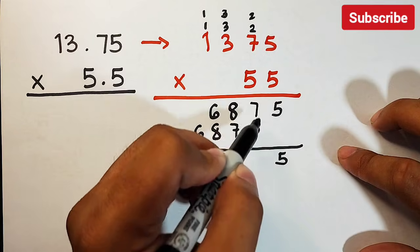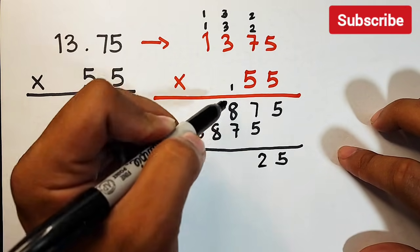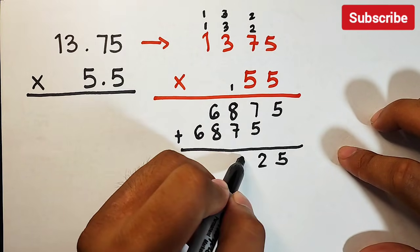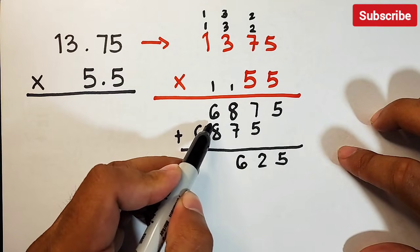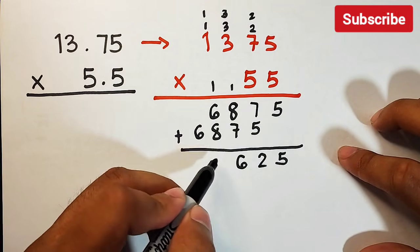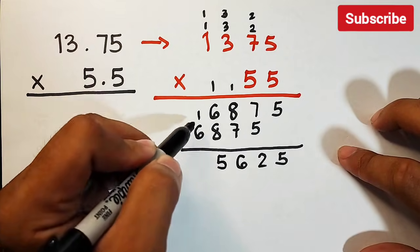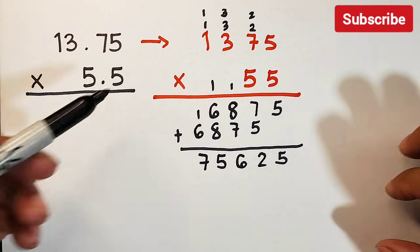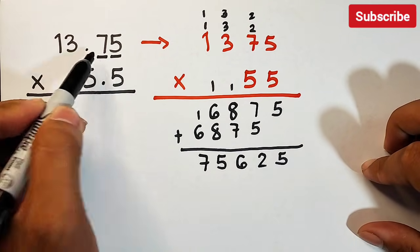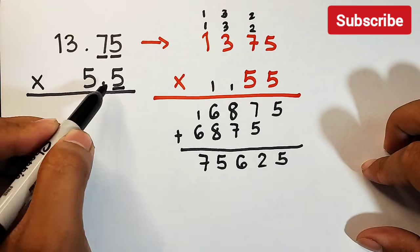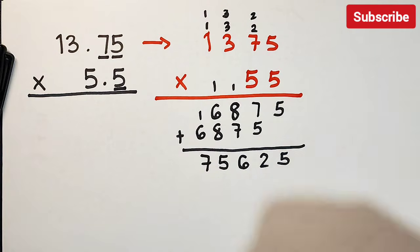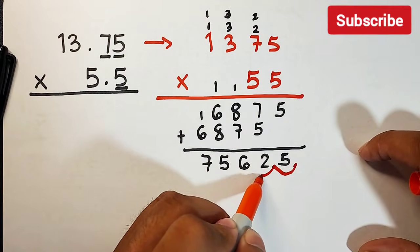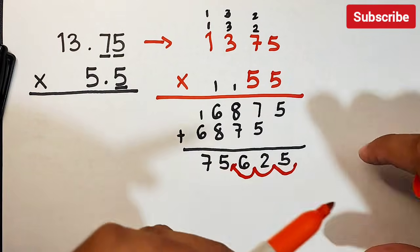Now we add the partial products: bring down 5, bring down 5. 7 plus 5 is 12, carry 1. 1 plus 8 plus 7 equals 16, carry 1. 1 plus 6 plus 8 equals 15, carry 1. 1 plus 6 is 7. To finalize, we count decimal places: 13.75 has 2 decimal places and 5.5 has 1, giving us 3 decimal places total. We move 3 places from right to left.